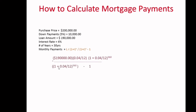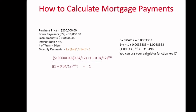So 1 plus 0.04 divided by 12, to the power of 360. The r means the interest rate per month, which is 0.04 divided by 12. When you add 1 to that, it comes out to approximately 1.0333 in the calculator. You can use the function key x-to-the-y: put in 1.03333, press the x-to-y key, then enter 360, and it gives you 3.313498. That makes it easier to calculate that number.